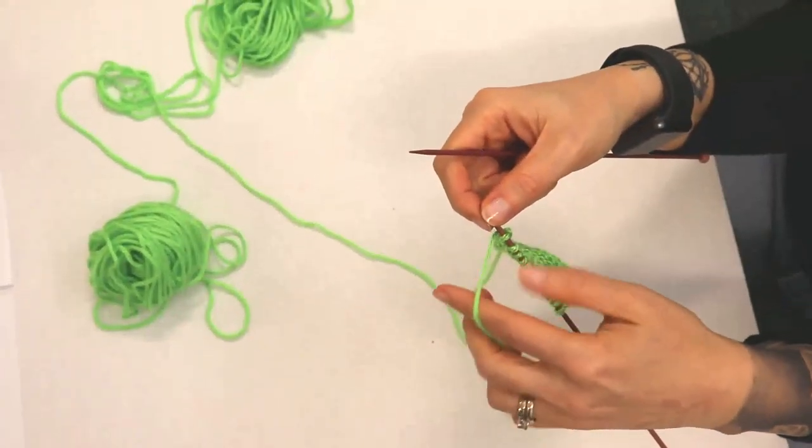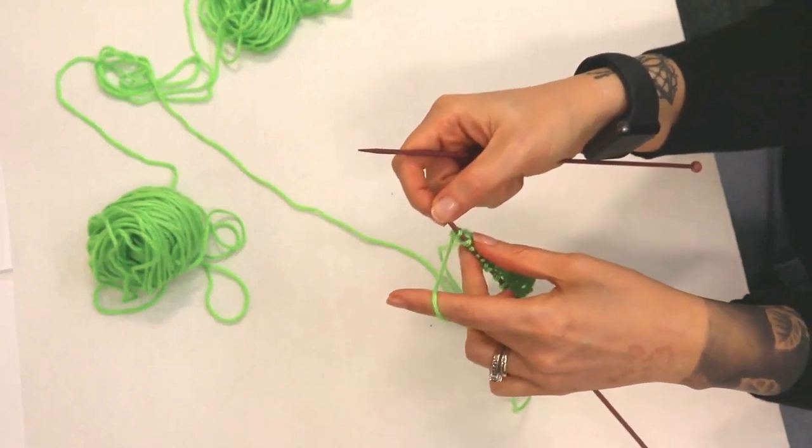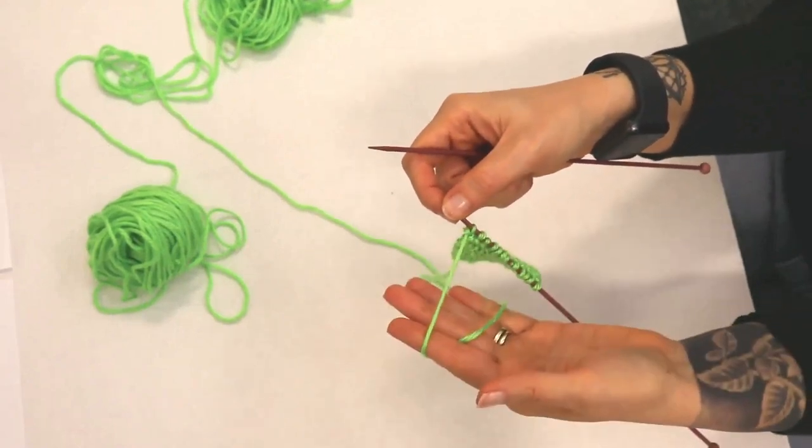Hold the needle with the cast-on stitches in your left hand. Wrap the working yarn around your left index finger and hold it behind the left needle.